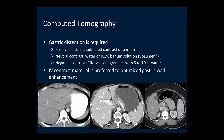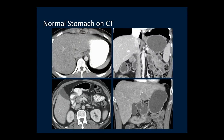Gastric distention is required for evaluation of the stomach on CT. This can be achieved with positive, neutral, or negative contrast material. In all cases, IV contrast material is preferred to visualize gastric wall enhancement. We see the normal stomach with positive contrast material on the left and neutral contrast material on the right. Surrounding it is low attenuation edema in the gastric wall that extends into the gastro-hepatic ligament.